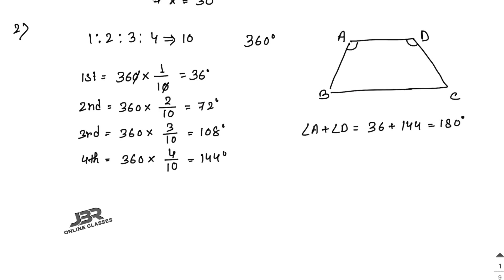Now, angle A + angle D = 36 + 144 = 180°. These are co-interior angles, so AD is parallel to BC. Therefore ABCD is a trapezium.